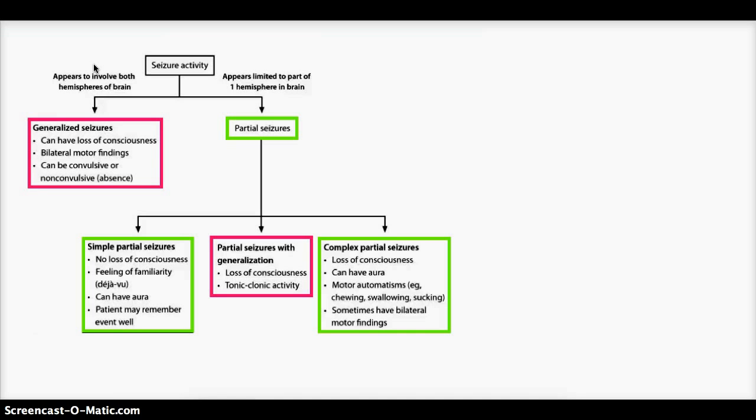Now coming back to the major classification, looking at generalized seizures, there will be loss of consciousness and there will always be bilateral motor findings. They can also be convulsive, such as tonic-clonic, or non-convulsive, such as absence seizure.